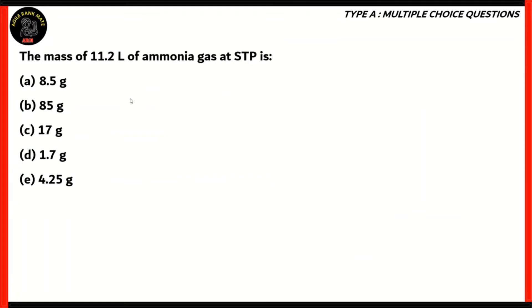Let's move on to the final question. The mass of 11.2 liters of ammonia gas at STP is: 8.5 grams, 85 grams, 17 grams, 1.7 grams, or 4.25 grams. Here again, we need to convert volume to mass. And the way to do that is through the mole concept. We convert volume into number of moles, and then we convert number of moles into mass.